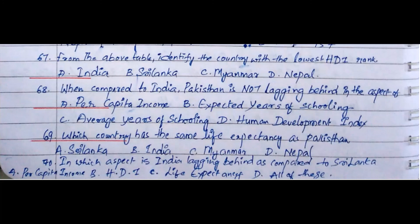Question 70: In which aspect is India lagging behind as compared to Sri Lanka? Option A. Per capita income, Option B. Human Development Index, Option C. Life expectancy, Option D. All of these. The answer is Option D. All of these.